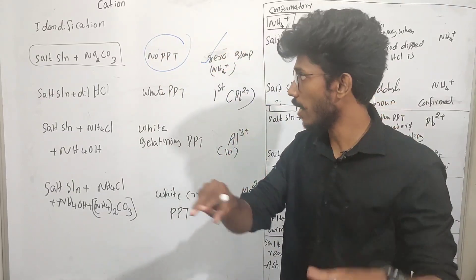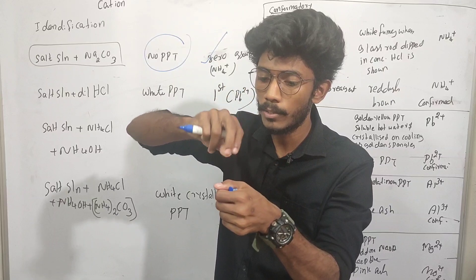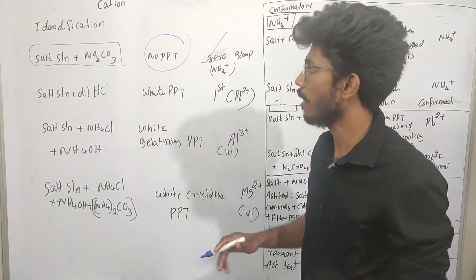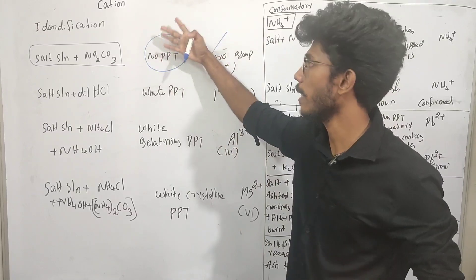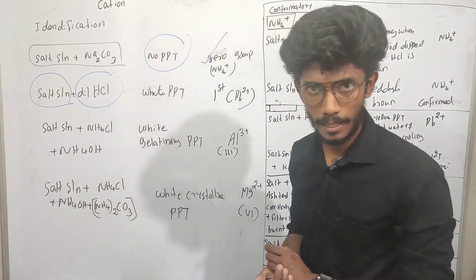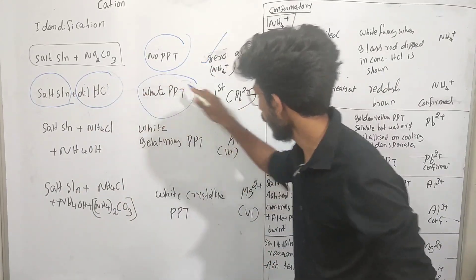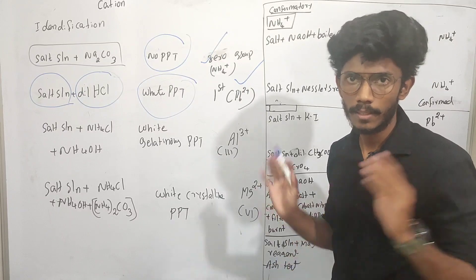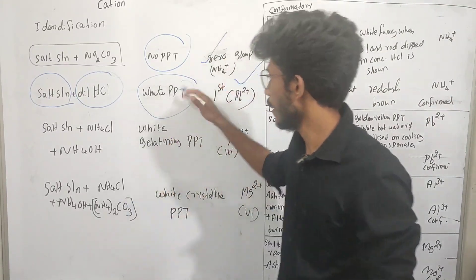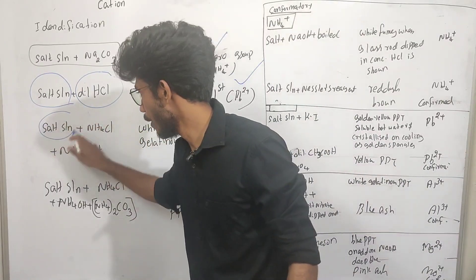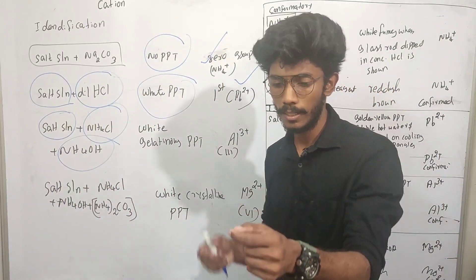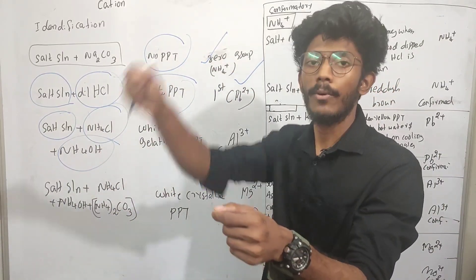If you take sodium and you have a solution, there is ammonia present. If there is any precipitate here, it will be with the salt solution. If you have a white precipitate, you can use lead. If you have a white precipitate, you can use salt solution — it will be ammonium hydroxide.